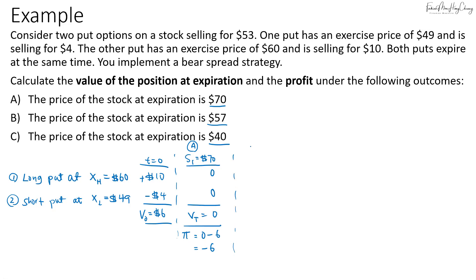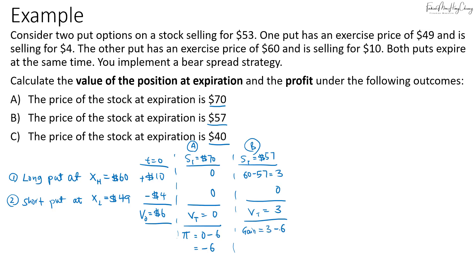For scenario B, if the spot price is $57: the long put can be exercised, so the payoff is 60 minus 57, and you receive $3. The short put cannot be exercised in this case. So the value of the bear spread strategy is $3. Your gain will be $3 minus the initial value of $6, so you have a loss of $3.